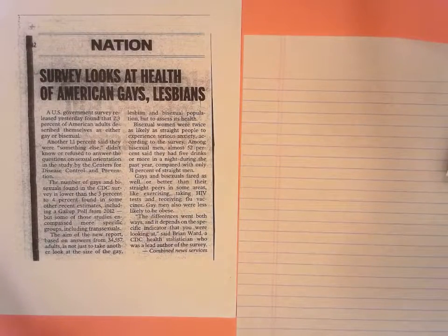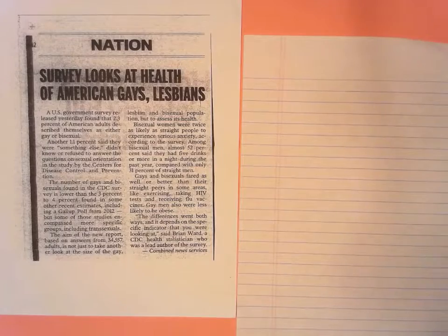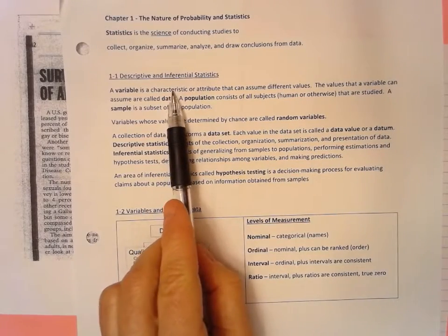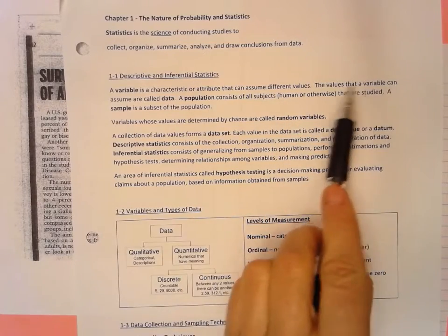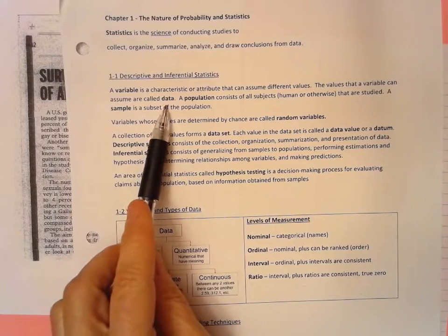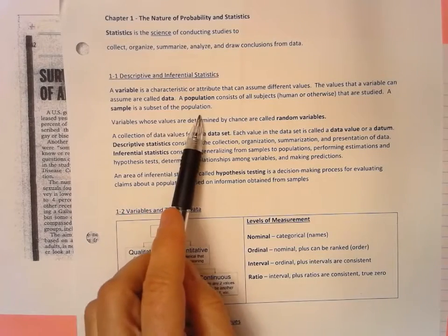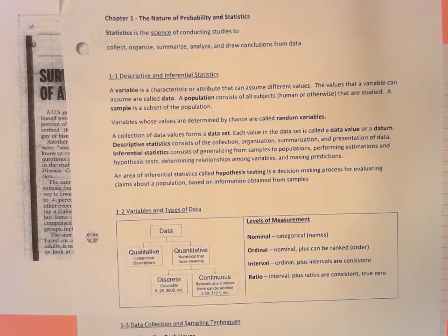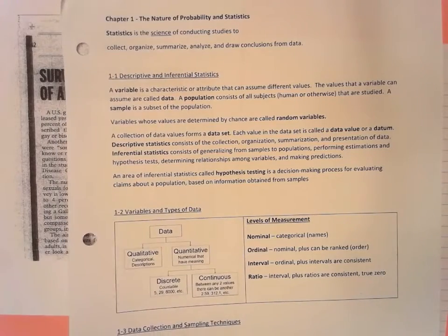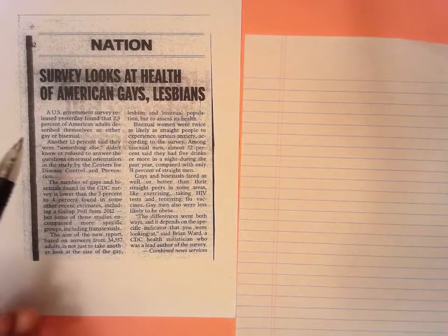Our next question was, identify three variables used in this study. Let's see what a variable is. A variable is a characteristic or attribute that can assume different values. The values that a variable can assume are called data. A population consists of all subjects that are studied. A sample is a subset of the population. So like before, our sample was the 34,000 and our population was all Americans. So I am looking for variables, a characteristic or attribute that can assume different values. So one of them right off the bat that you can see is sexual orientation.